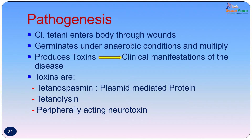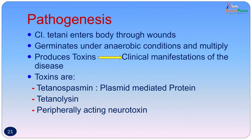How does the disease actually occur? Clostridium tetani, once entered through the wound, germinates under anaerobic conditions and multiplies. When they multiply, they produce a toxin, and clinical manifestations are because of the toxin. The bacteria are restricted to the site of entry, but the toxin travels from the site and the bacteria may also die, while the toxin performs the functions and gives the clinical disease. The toxin consists essentially of three components: tetanospasmin, tetanolysin, and a peripherally acting neurotoxin.